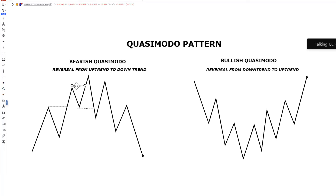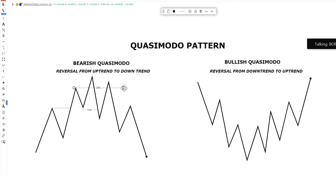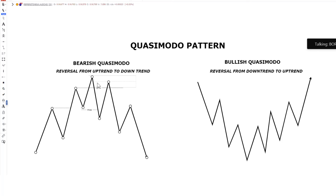All you have to do is label your QML level and extend the line, because this is where we're going to get involved in the market. You need to pay attention to this particular high — this higher high that formed the low before the break of structure is your QML level. When you extend this level, this is where you're going to wait for price to retest. When price forms a QML pattern, inside the QML range, from this high to this particular area, we have an order block inside this range. Price will always leave an order block inside this range — this is why we have the confidence to trade the QML level.